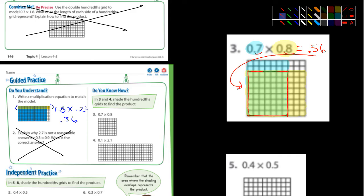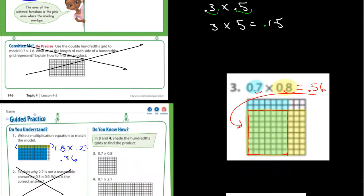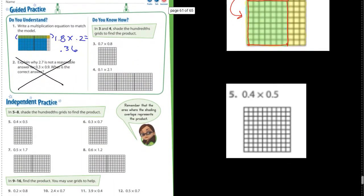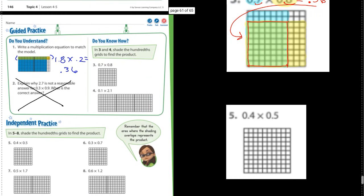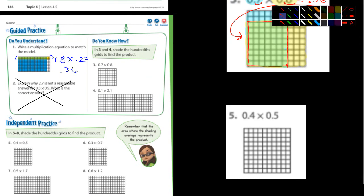Let's look at number five. It says 0.4 times 0.5. So I'm going to do 0.4 in purple. And so I'm going to count over 1, 2, 3, 4.